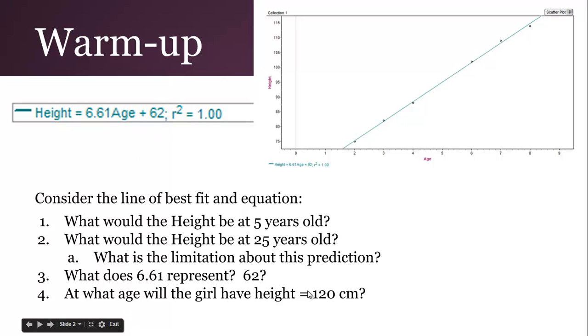At what age will the girl have a height of 120? We can look and see. It's an extrapolation, but it's a little bit more reliable because it's not as far outside the data. But the question is, how would you actually solve that other than just continuing the line? If we plug in the 120 for height, we have a little bit of algebra to do to solve for the age.